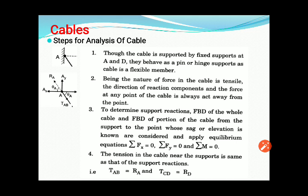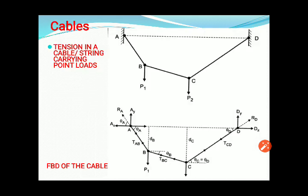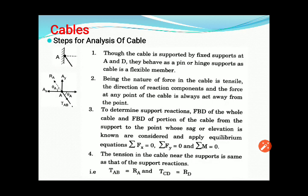To determine support reactions, draw the free body diagram of the whole cable and the free body diagram of the portion from the support to the point whose sag or elevation is known. Apply equations of equilibrium: summation Fx = 0, summation Fy = 0, summation M = 0. If any one sag value is known, take a section about that portion and use equilibrium equations to find the required data.